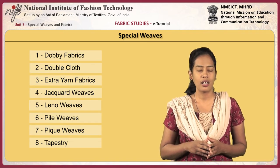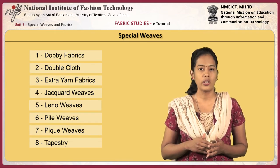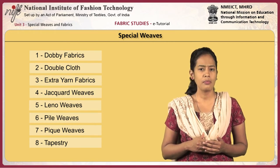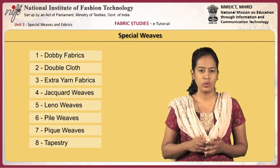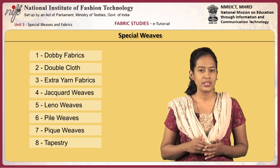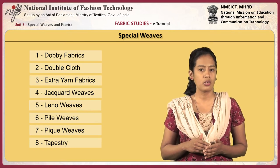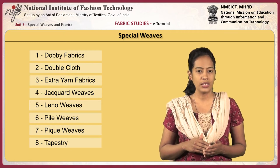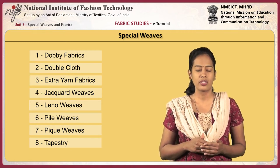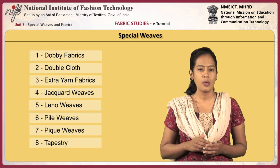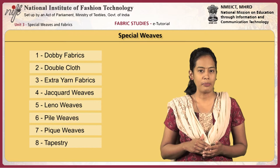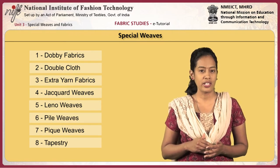The weaving techniques of these fancy fabrics are complex and hence are available at a higher cost than usual woven fabrics. Some common fancy weaves include dobby weaves, double cloth, extra yarn fabrics, jacquard weaves, leno weaves, pile weaves, warp pile fabrics, weft pile fabrics, pique fabrics, and tapestry.